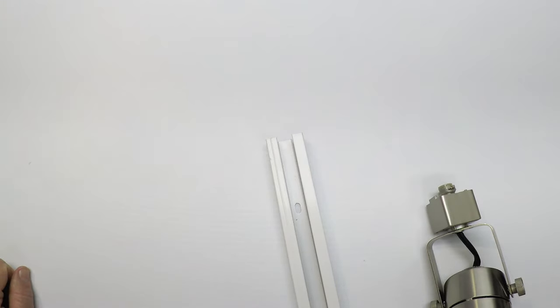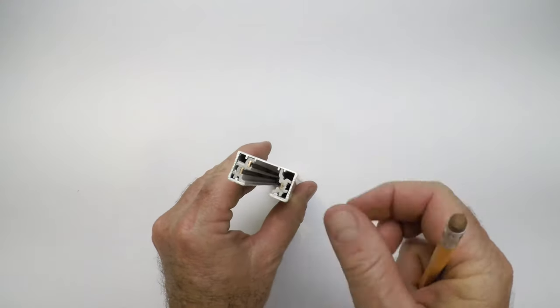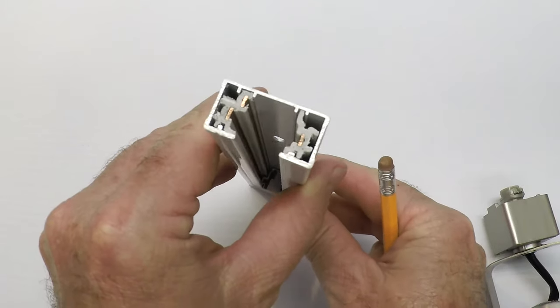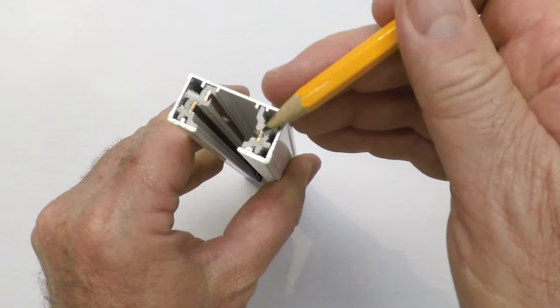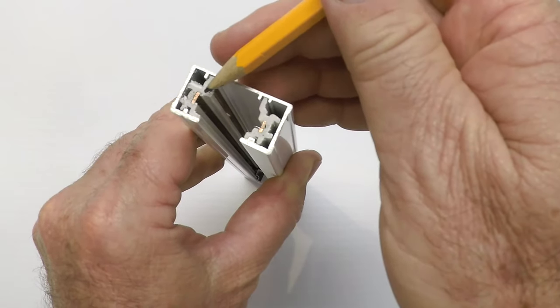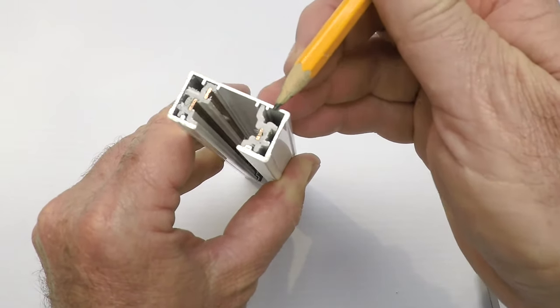So I'm going to get right to it. This is an H-style track, and I'm holding it here on end. I'm hoping you can see it. The track is H-style, it's very common, and it has bus bars in it.